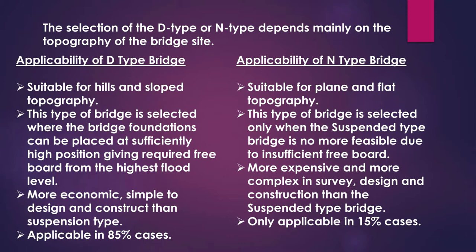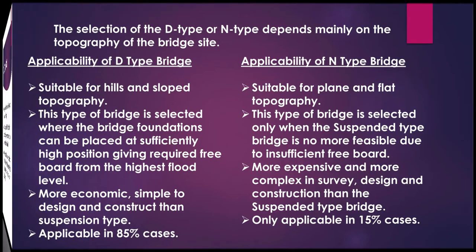D-type bridges are more economic, simple to design and construct than suspension type, and are applicable in 85% of cases. Similarly, N-type bridges are more expensive and more complex in survey, design, and construction than the suspended type bridge, and are only applicable in 15% of cases.